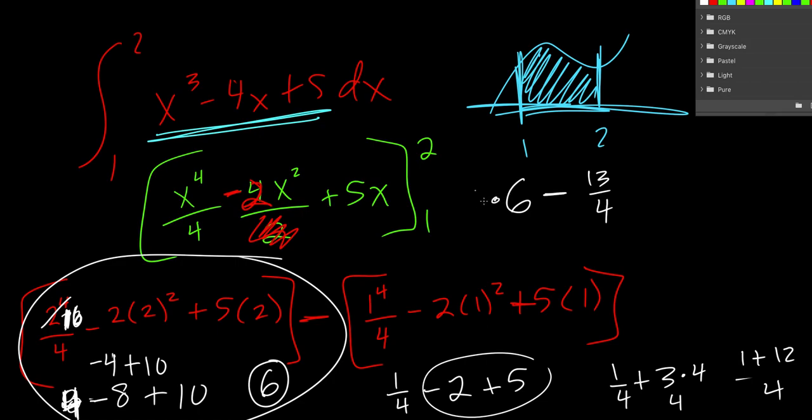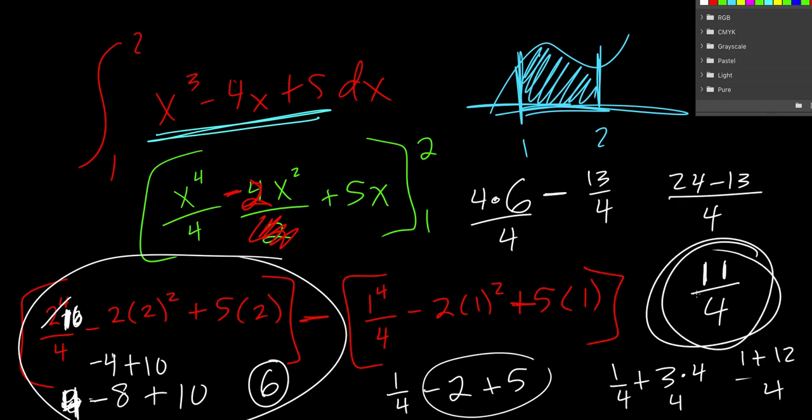So minus 13 fourths is what we get over there. And so if we multiply the top by 4, bottom by 4, we get 24 minus 13 over 4. And so if we subtract that, we get 11 fourths. So the area under this curve in between 1 to 2 is 11 fourths units.